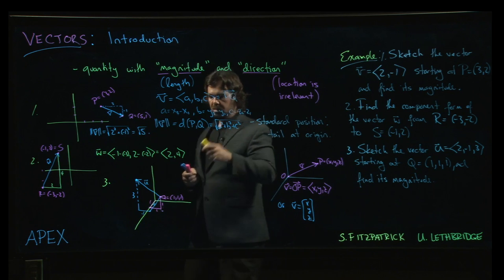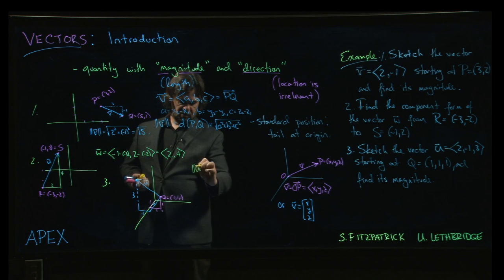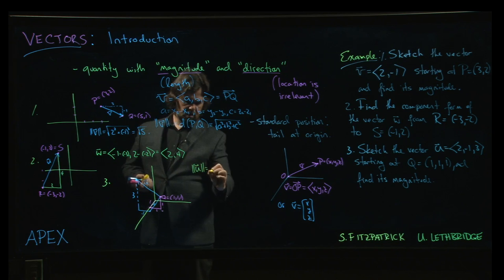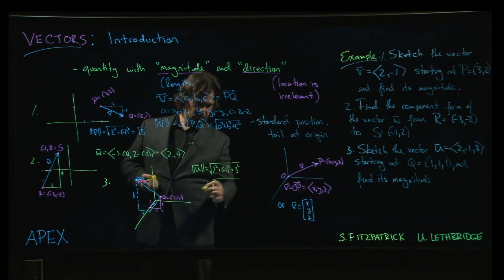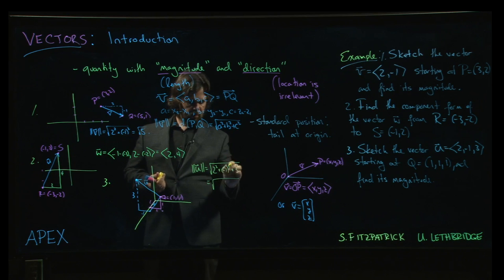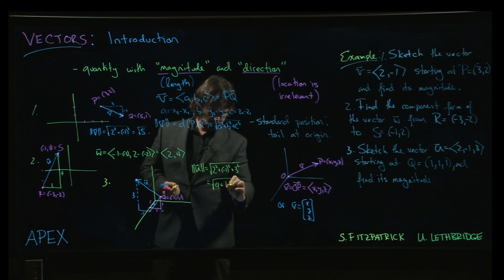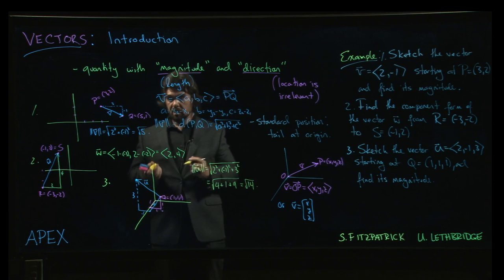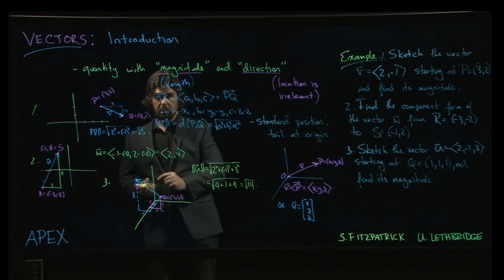Now, as far as magnitude, well, we have already the component form for the vector. So we just have to plug the values in to the magnitude formula. So two squared minus one squared plus three squared. All right. So we get four plus one plus nine. So we get square root of 14 for the magnitude of the vector, which again is just the distance from the tail to the tip.